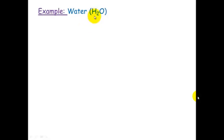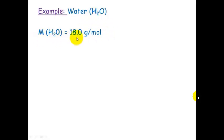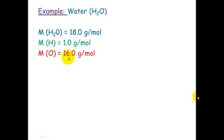Let's look at water, H₂O. The molar mass of water is 18.0 grams per mole. Oxygen is 16 and hydrogen is 1 each, so that makes 2 plus 16 which is 18.